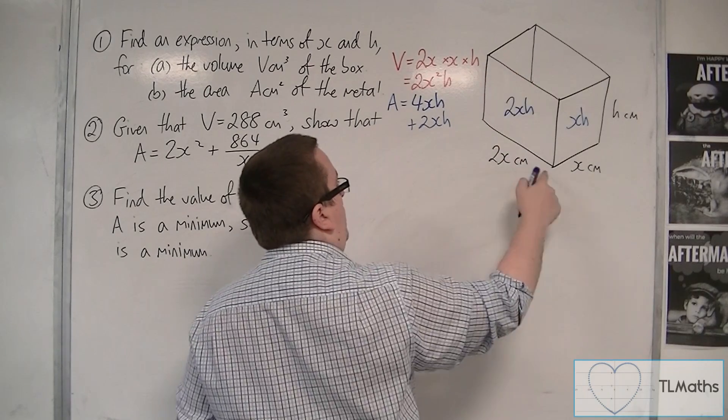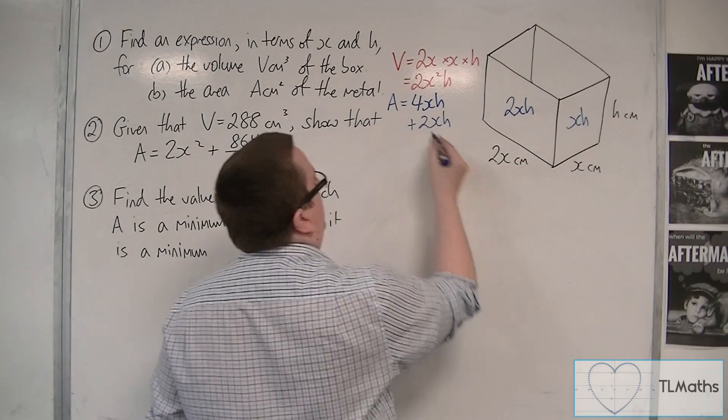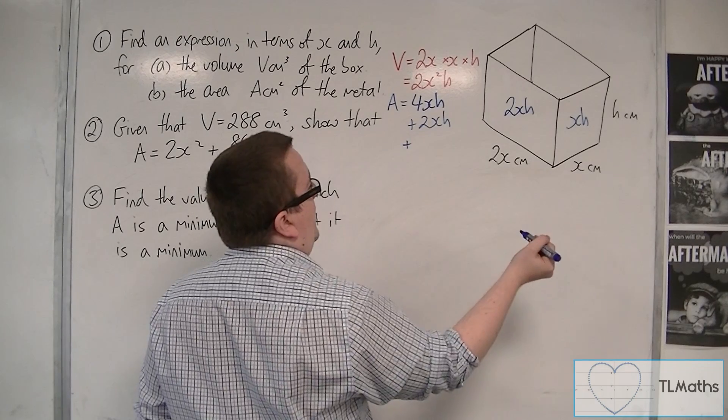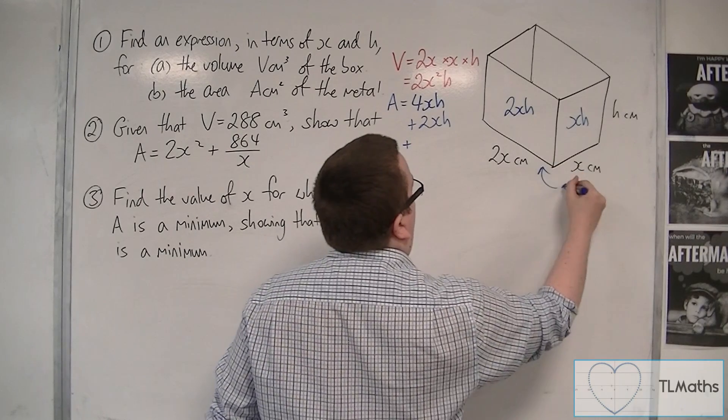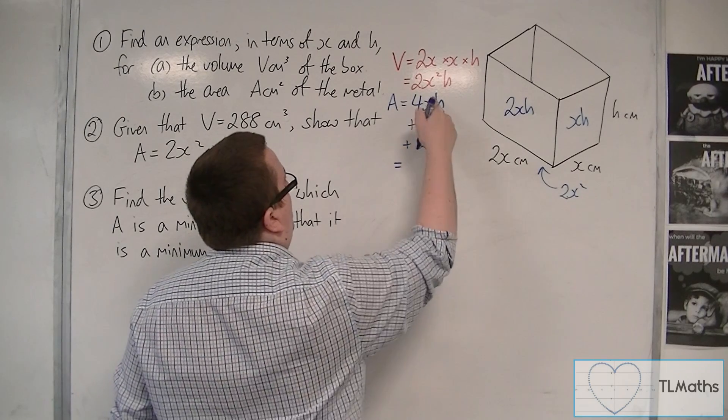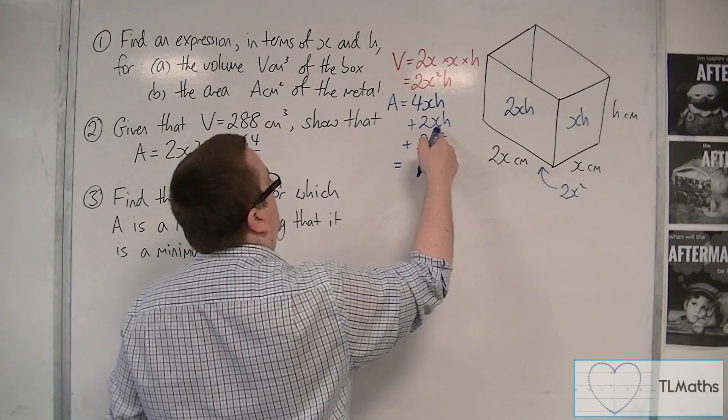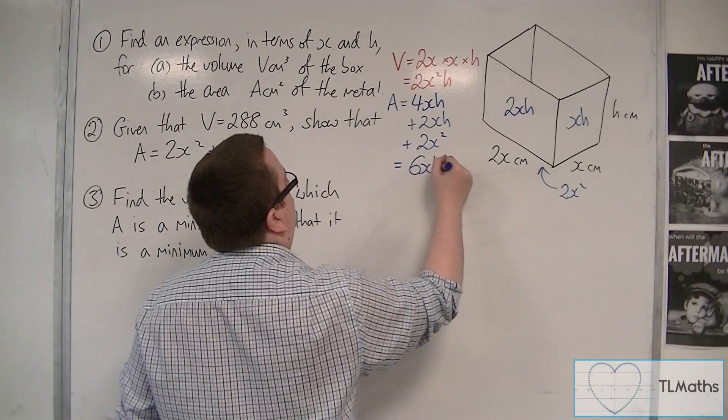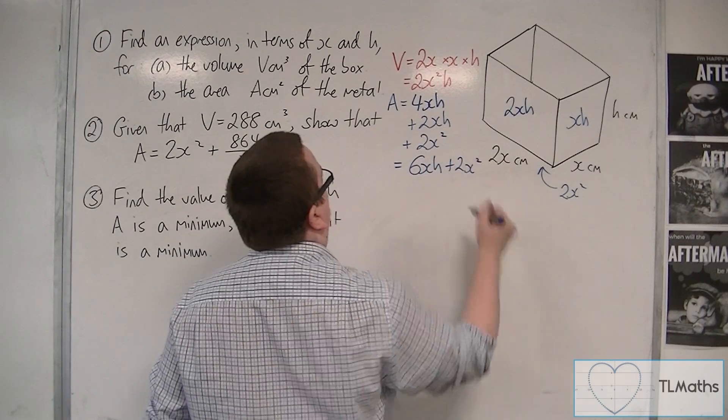And we've got the base. But we don't have a top, so it's just one of the base, 2x by x. So 2x times x, so the base, it will be 2x squared. So that leaves us with 4xh plus 2xh, which is 6xh plus 2x squared.